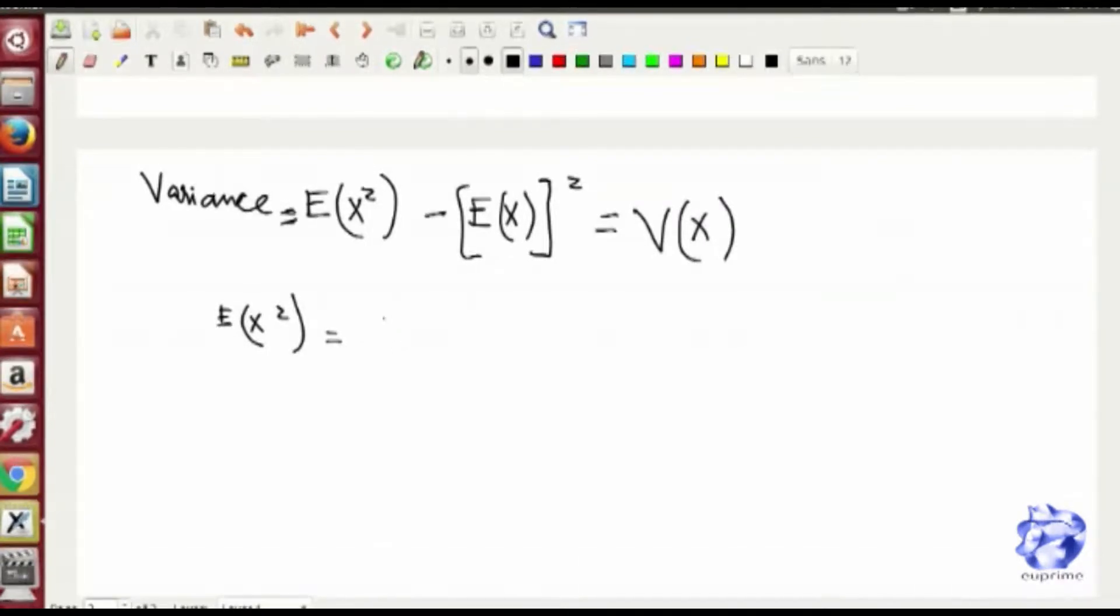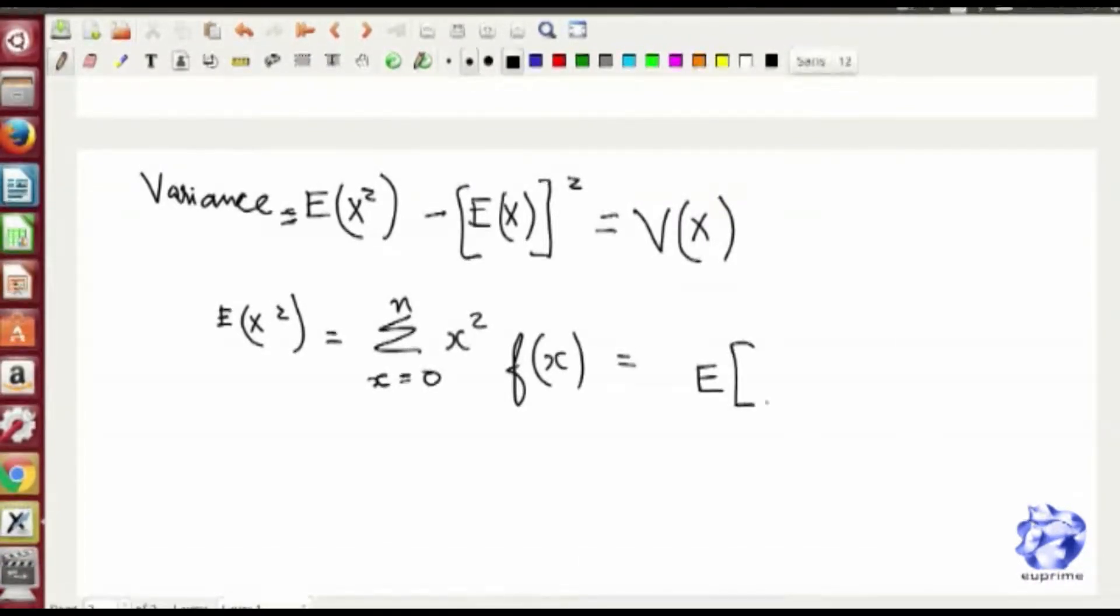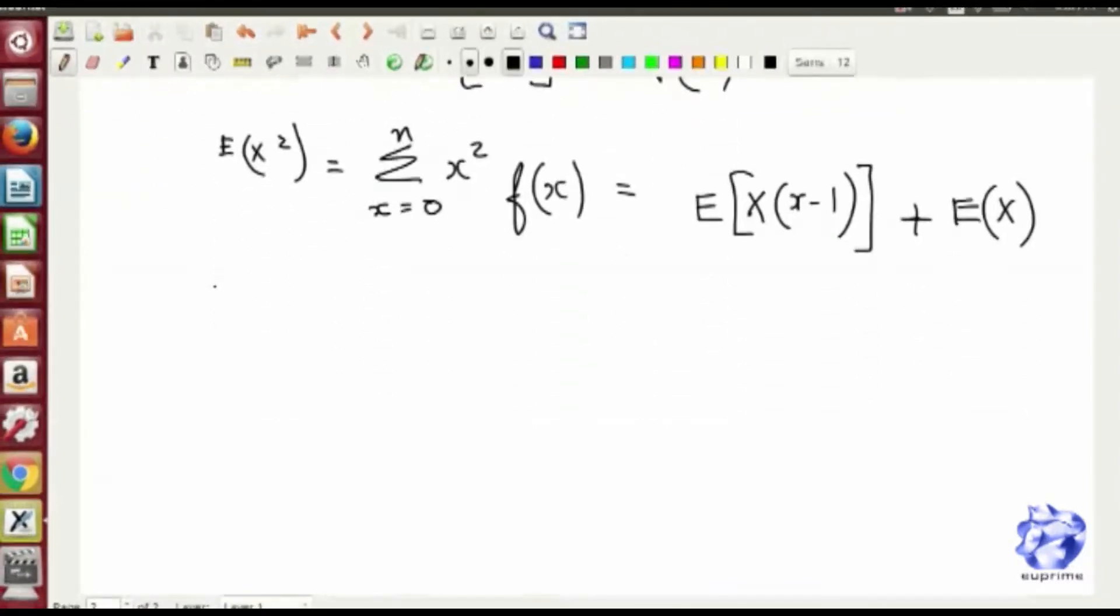So this np is taken outside and the whole term after np evaluates to 1. If you just look at it, it's basically a binomial expansion. So expected value of X is np—that's the mean term.